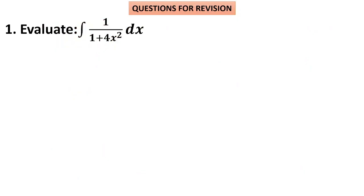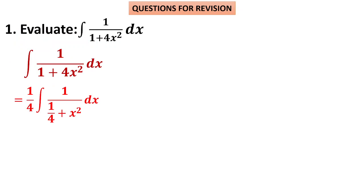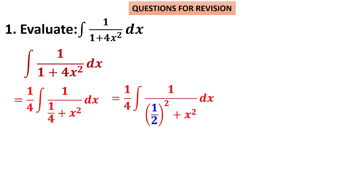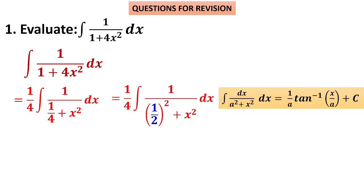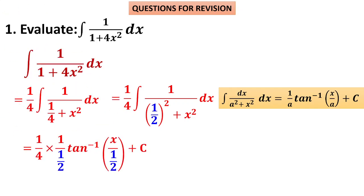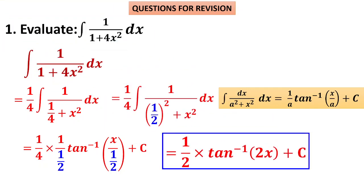Question 1: ∫dx/(1 + 4x²). Take 4 outside → (1/4)·∫dx/((1/4) + x²). Visualize 1/4 as (1/2)², so it is of the form x² + a² with a = 1/2. Apply formula (1/a)tan⁻¹(x/a): → (1/4)·(1/(1/2))·tan⁻¹(x/(1/2)) = (1/4)·2·tan⁻¹(2x) = (1/2)tan⁻¹(2x) + C.